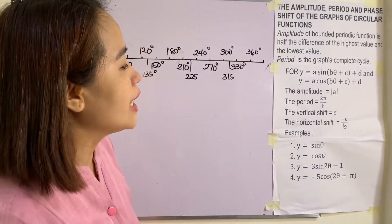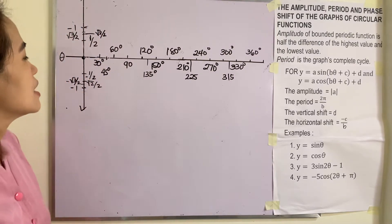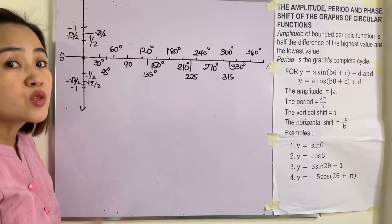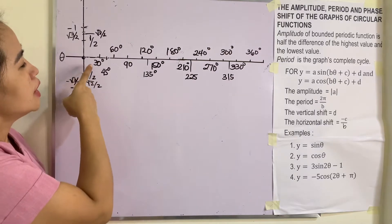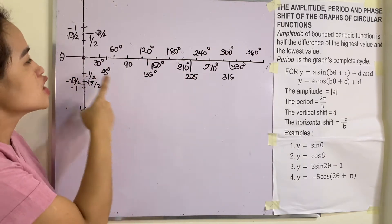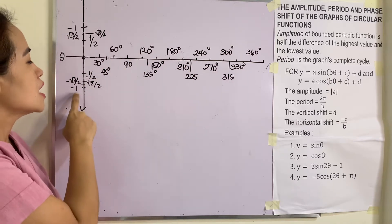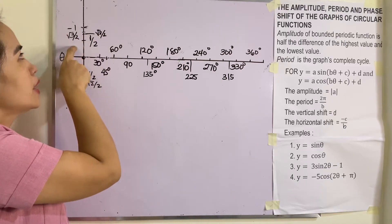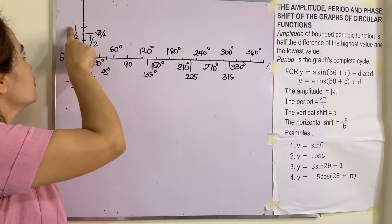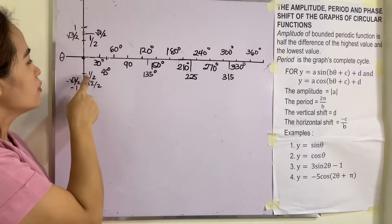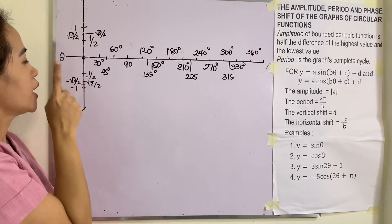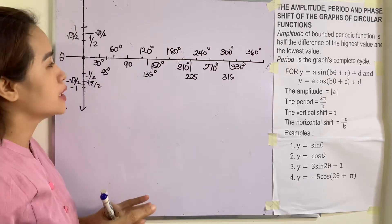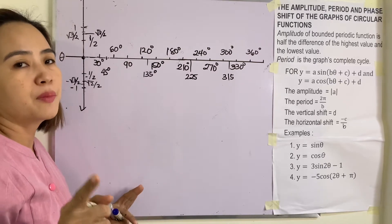Example 1: let us graph y = sin θ. The y-axis and x-axis (theta) form the circular function. I have written all the special angles from 30° to 360° with their corresponding sine values: 0, one-half, √2/2, √3/2, and positive 1. We also have negative one-half, negative √2/2, negative √3/2, and negative 1. Note that √2/2 ≈ 0.7 and √3/2 ≈ 0.87, so √2/2 is less than √3/2.